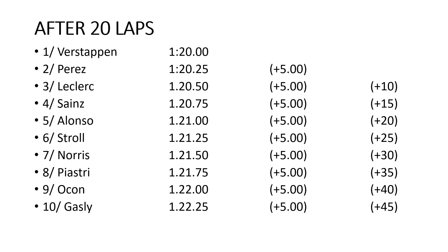After 20 laps, it's 20 lots of a quarter of a second — which is five seconds separating each competitor. Which means Norris in seventh is now 30 seconds behind the lead car, and Gasly in 10th is 45 seconds. These gaps are increasing, the field continues to spread out, lapping lap after lap at their optimum pace.